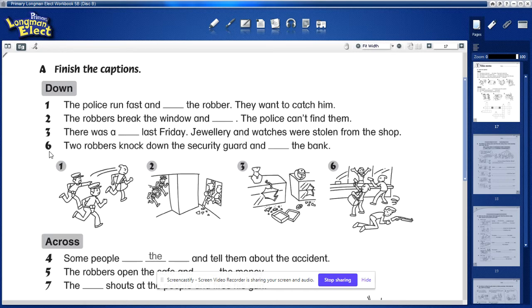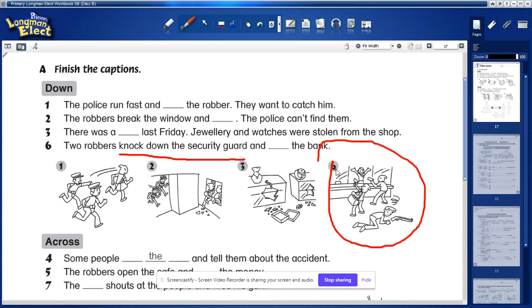I think all these sentences are quite straightforward, so I'm not going to read them all out to you, but I will read out sentence number six. Two robbers knock down the security guard and rob the bank. Knock down the security guard. So let's take a look at this picture. These two are the bad robbers, right? And they actually knock the security guard down.